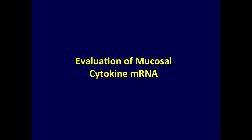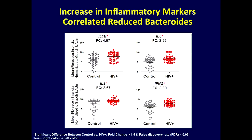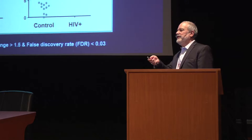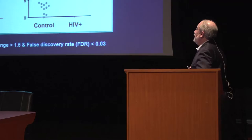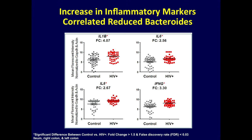Two independent cohorts, analyzed by two different groups in terms of informatics and sequencing, showed similar data — and at least two or three other studies have shown very similar results. There's a decrease in bacterial species capable of anti-inflammatory short-chain fatty acid production, which we think has relevance in terms of potential pathogenesis and reconstitution. We've also directly linked mucosal cytokine mRNA using a Luminex platform, showing increased inflammatory markers — IL-1 beta, IL-6, IL-8, and interferon gamma — all elevated in correlation with the loss of Bacteroides, in patients on suppressive antiretroviral therapy with good CD4 reconstitution. We're also correlating residual virus in tissues with inflammatory mediators and the gut microbiome.